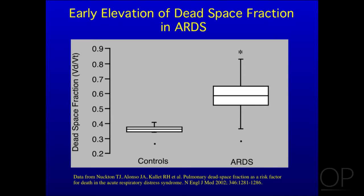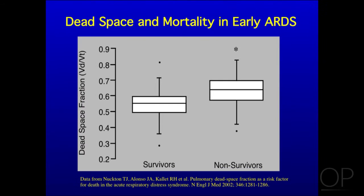Looking at the data in a figure, you can see here the early elevation of dead space — these were done within 24 hours of the diagnosis of ARDS. The median was 0.58 in ARDS versus ventilated controls where it was 0.36. And here's the data for non-survivors versus survivors — it was significantly higher in the non-survivors, with a pretty good separation.